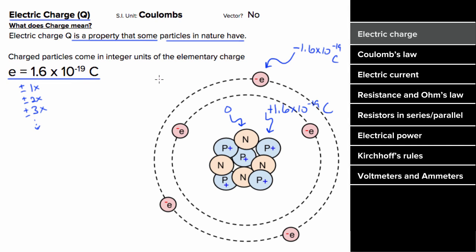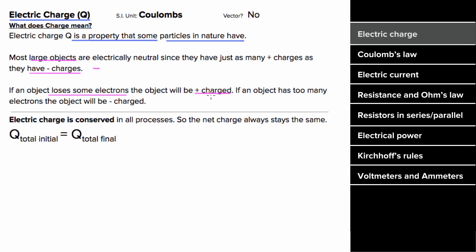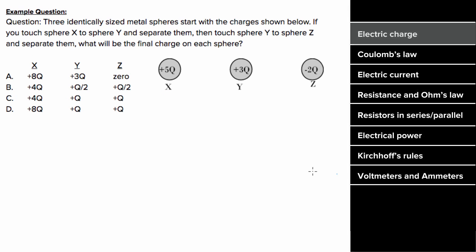However, most atoms in the universe are electrically neutral overall since they'll have just as many negative electrons as they do positive protons. But if an atom had too many electrons, overall that atom would be negatively charged. And if an atom had too few electrons, that atom would be overall positively charged. And something that's really important to remember is that electric charge is always conserved for every process.